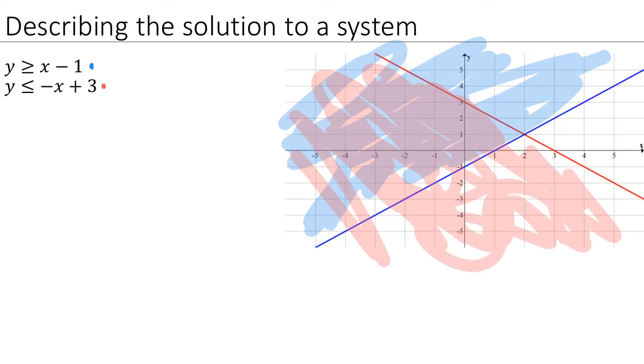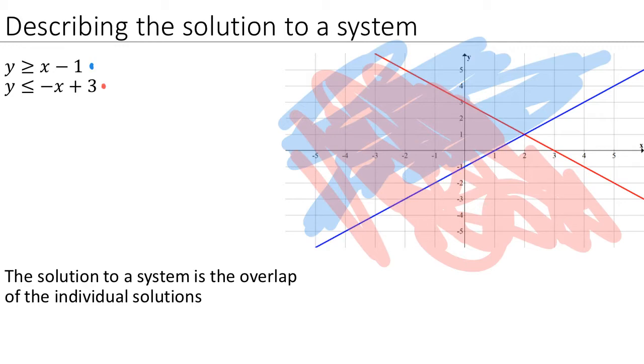The solution to the system overall needs to be points that are in both the blue region and also the red region. Well, graphically, that is the overlap of those two regions. And so the solution to the overall system is this region here, that is the overlap of the individual solutions. And that's the moral of the story when it comes to systems of inequalities. The overall solution to a system is the overlap between the individual solutions.